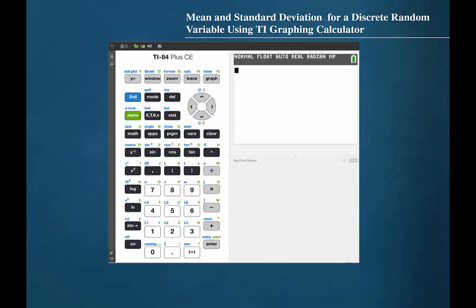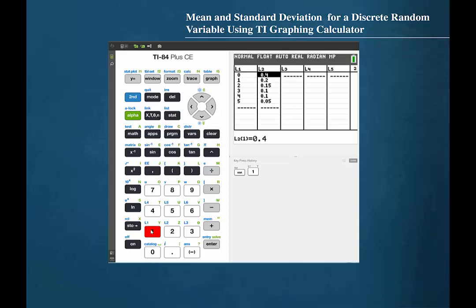In order to use the TI graphing calculator to calculate the mean and standard deviation for this discrete random variable, we will begin by pressing STAT, then press 1 to enter the list editor. Type the values of the random variable into list 1 and their respective probabilities into list 2. It is important that the corresponding values of the random variable and the probabilities are adjacent to each other in this list.